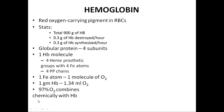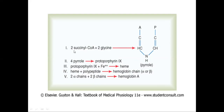How is hemoglobin formed? Two molecules of succinyl-CoA are required, which are formed by the citric acid cycle or the Krebs cycle within the body. These 2 molecules of succinyl-CoA combine with 2 molecules of glycine in the presence of vitamin B6, and in turn a pyrrole ring is formed. Then 4 pyrrole rings will combine to form protoporphyrin 9. Protoporphyrin 9 combines with iron to form heme.